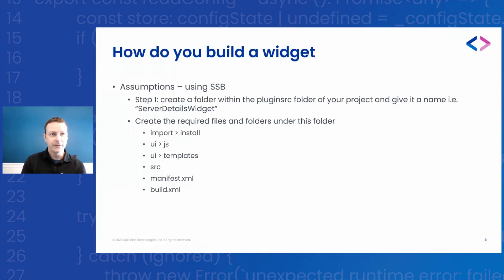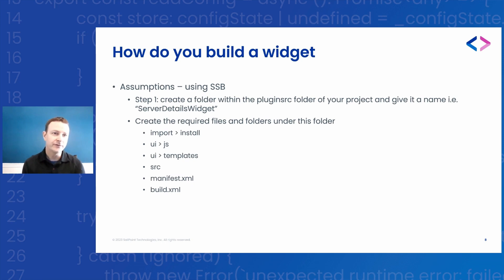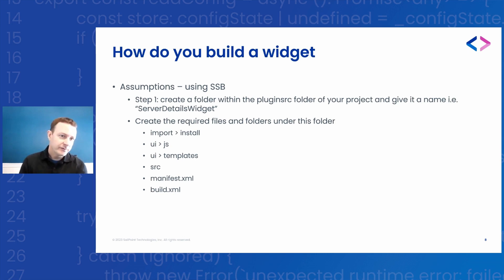So what are the different widget components and how do you build a widget? I'm going to make an assumption here — if you're not using SSB, the Standard Services Build, I strongly encourage you to do that. Step one is, within the plugin source folder of your Standard Services Build, create a folder for your plugin and give it a name. Underneath that folder, create the required files and folders. We aren't using database scripts or any external Java library, so it's pretty basic.